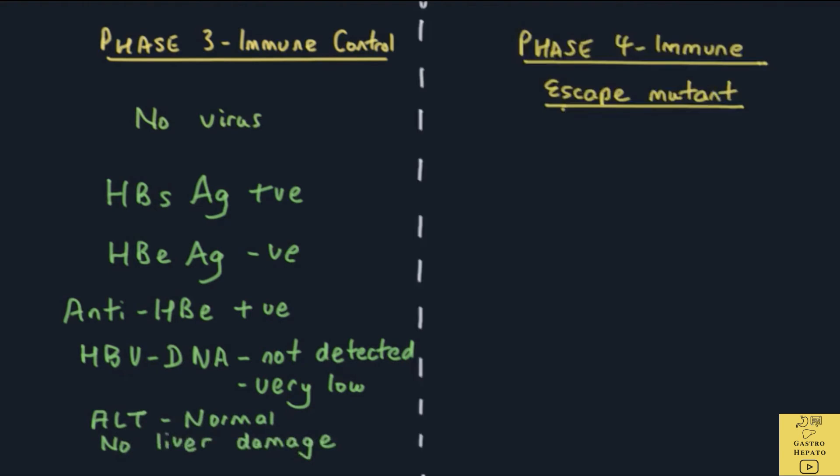Phase 4 is called the immune escape mutant phase or reactivation phase where the virus becomes active again and starts to multiply. This is a mutant virus and is a different strain of the original virus seen in Phase 1 and 2. The E protein is absent and it is now replaced by the M protein. The S protein is still there.